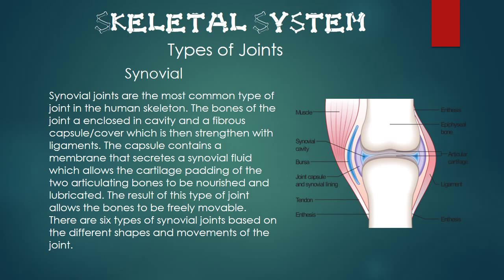Lastly is the synovial joints. Synovial joints are the most common type of joint in the human skeleton. The bones of the joint are enclosed in a cavity and a fibrous capsule, which is then strengthened with ligaments. The capsule contains a membrane that secretes a synovial fluid, which allows the cartilage padding of the two articulating bones to be nourished and lubricated. The result of this type of joint allows the bones to be freely movable.